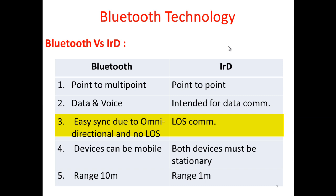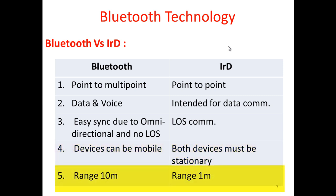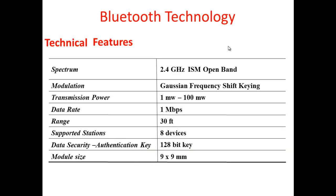Bluetooth offers easy synchronization, can turn off mid-direction, and requires no line of sight. A basic drawback of infrared is that it requires line-of-sight communication. Devices can be mobile with Bluetooth, but with infrared both devices must be stationary. Bluetooth has a range of 10 meters, while infrared is only 1 to 1.5 meters.